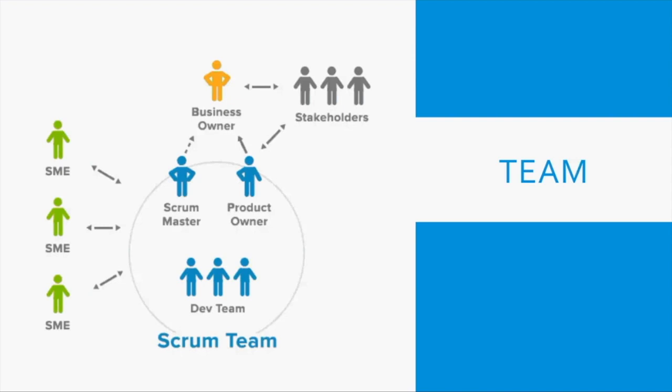The third role is the development team. You may ask where testers, developers, and business analysts are — they are all categorized as the dev team. Some people call everyone a developer, but as a QA or BA, there are other roles needed to build the application. Everyone is a member of the dev team.